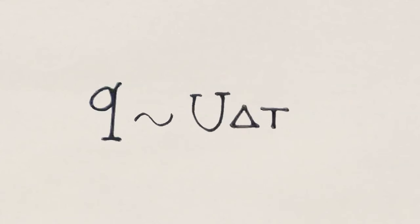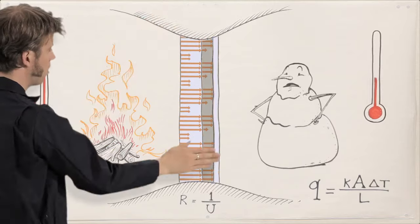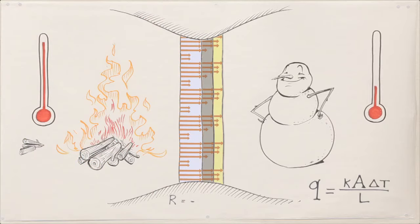But to insulate, you want high thermal resistance. That's the material's R-value, which is 1 over its U-value. Thermal resistance behaves similarly to electrical resistance. Adding layers of materials in series adds their R-values linearly.